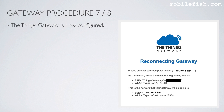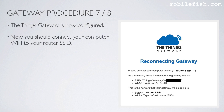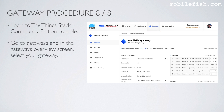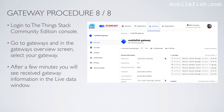The Things Gateway is now configured. Now connect your computer's Wi-Fi to your router SSID. Log in to the Things Stack Community Edition console, go to Gateways, and in the Gateways overview screen select your gateway. After a few minutes, you will see received gateway information in the Live Data window.